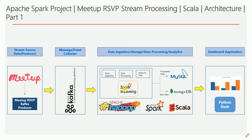From the Kafka topic, I consume using Spark Structured Streaming, do processing, and push it to storage. The processed data goes into MySQL database, and the raw data is stored in MongoDB — a document-oriented NoSQL database. I chose MongoDB because the RSVP message is in JSON format and fits naturally as a nested document. For simplicity I flatten the JSON structure before storing.